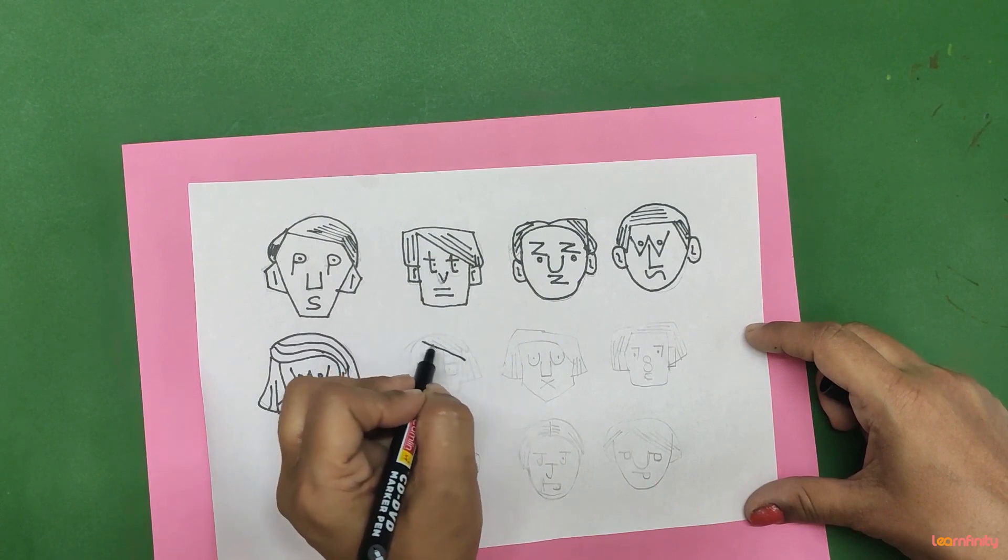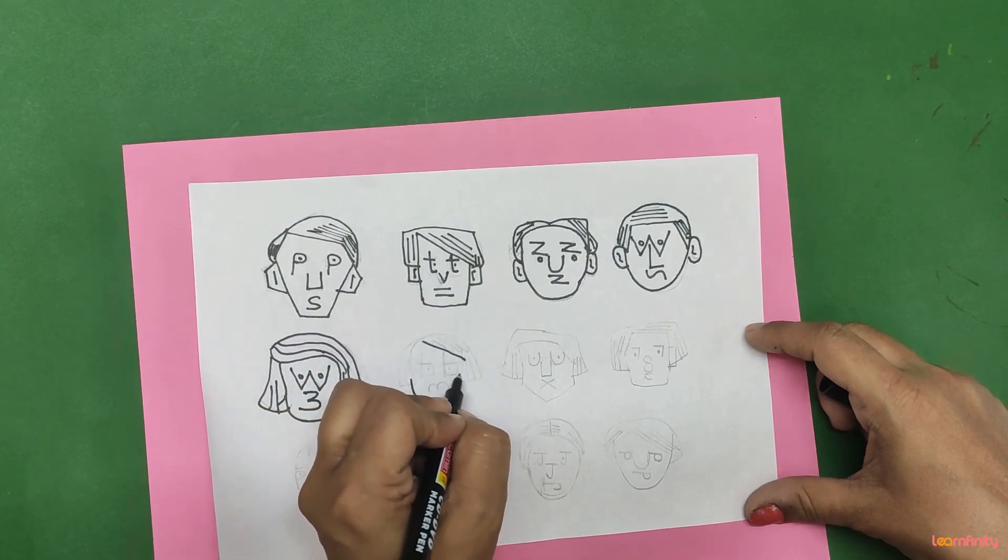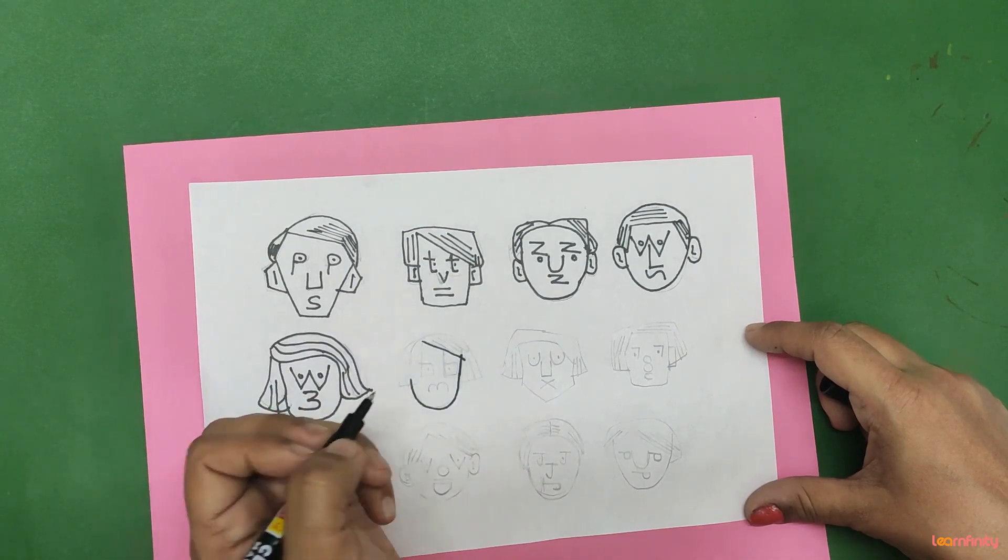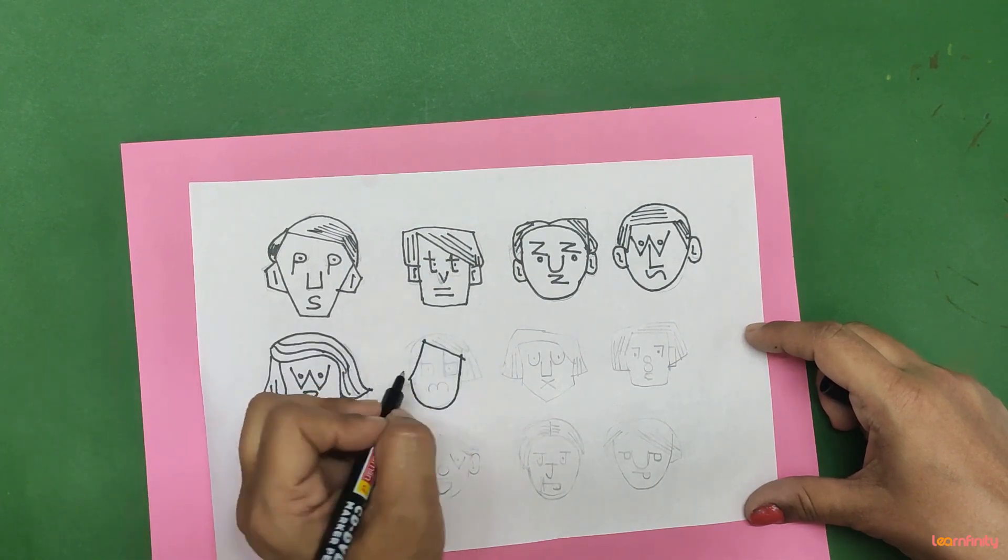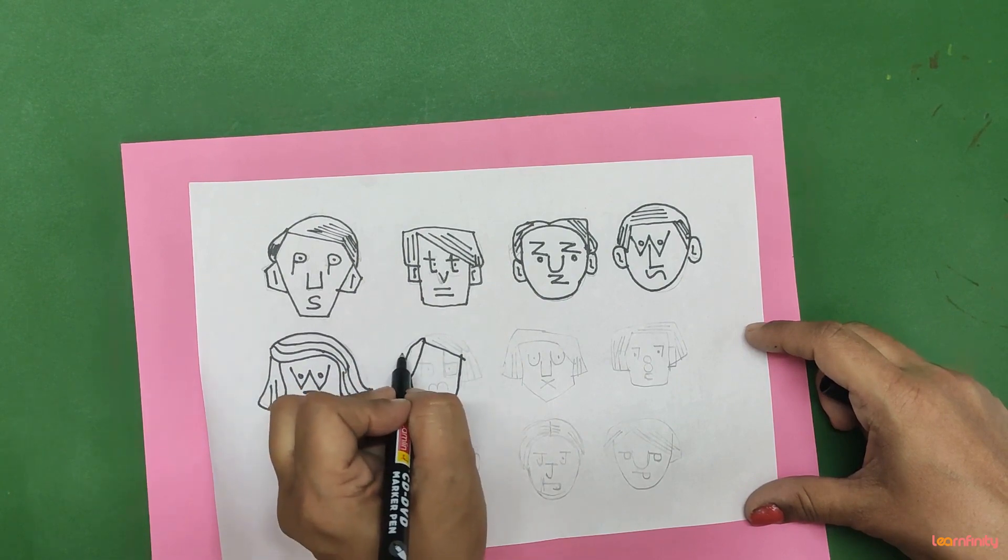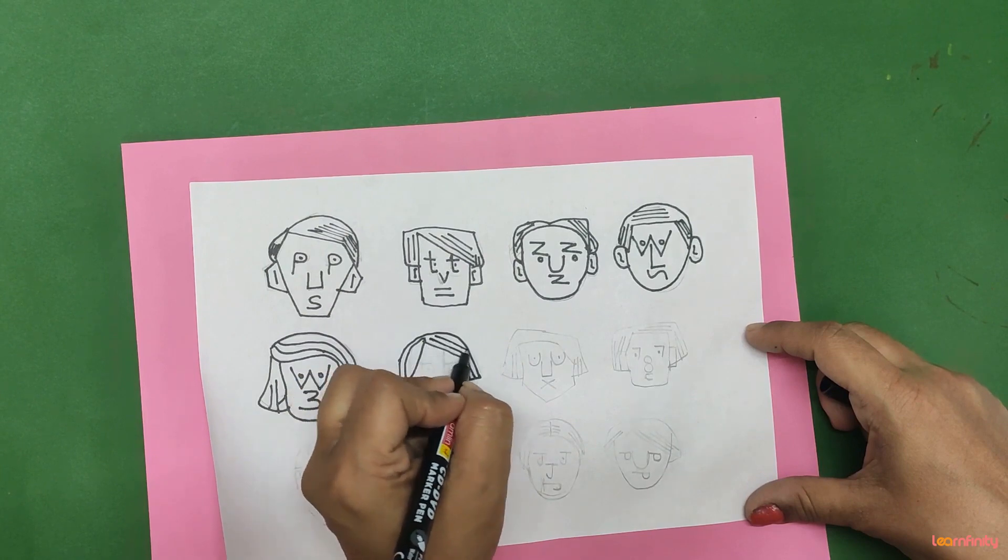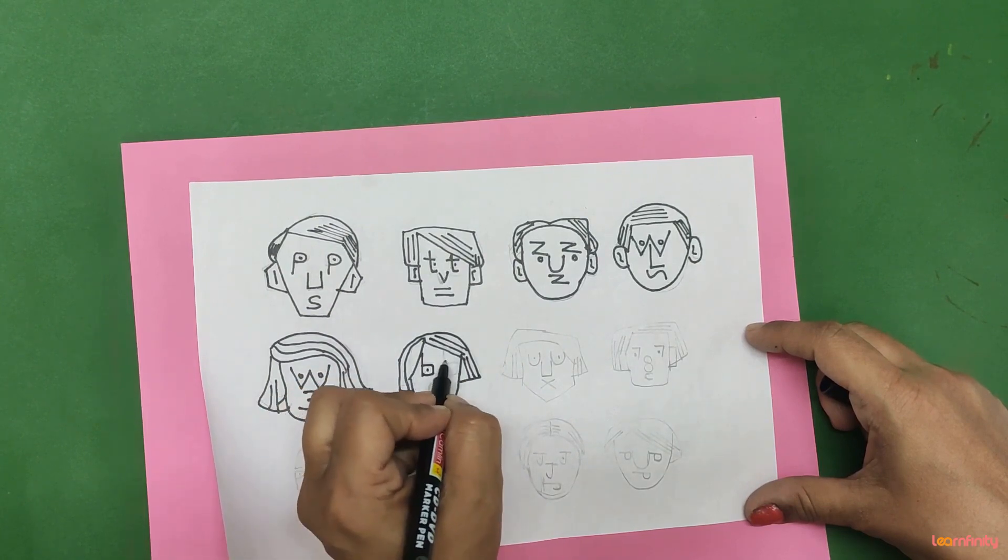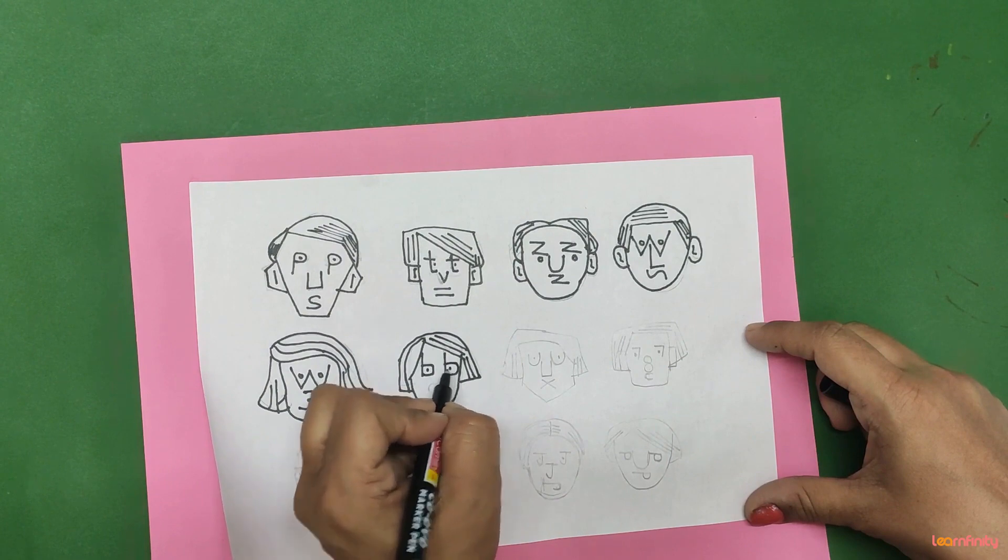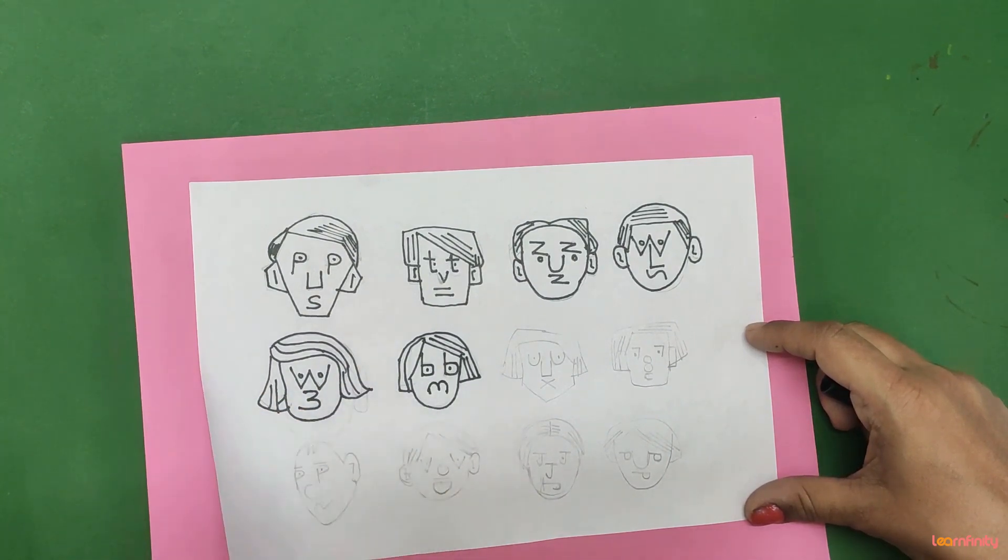Now next, we will draw the shape. See, this side also we will draw the shape. B and M, small M.